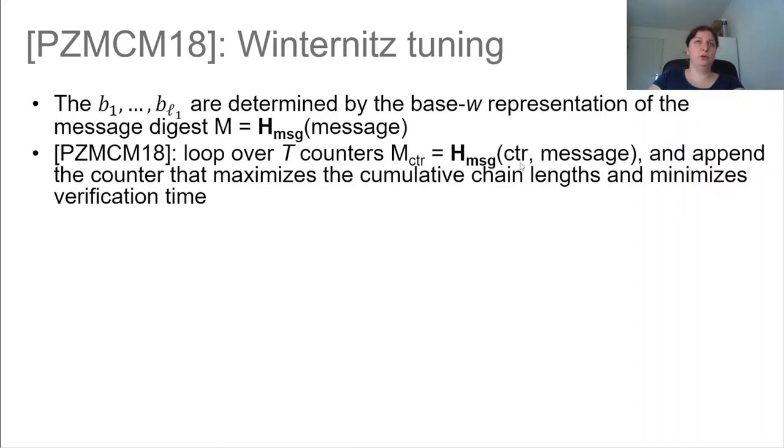and not just one counter but T different counters, you get a different output M. And by appending that counter and then choosing the chain values that you like best, so the ones that have the least verification time and therefore the ones that maximize the cumulative chain lengths. If you choose this message, then verification time goes down.